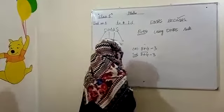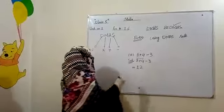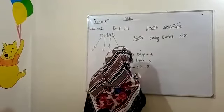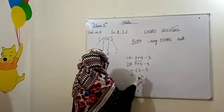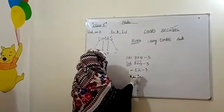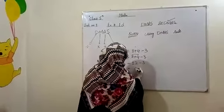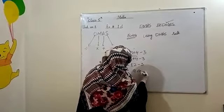8 plus 4, 12. 8 plus 4, 12, minus 3. And now we have 3 minus, then what is that? 9. This is answer.